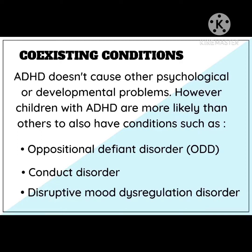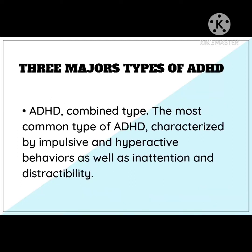First is Oppositional Defiant Disorder, also known as ODD, generally defined as a pattern of negative, defiant, and hostile behavior towards authority figures — a negative behavior towards others, especially people in authority. Next is conduct disorder, marked by antisocial behavior such as stealing, fighting, destroying property, and harming people or animals. The next is Disruptive Mood Dysregulation Disorder — a disorder characterized by irritability and problems tolerating frustration, easily becoming irritable and intolerant of others.